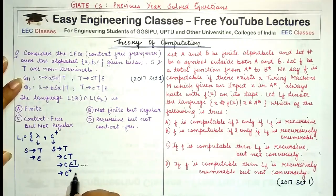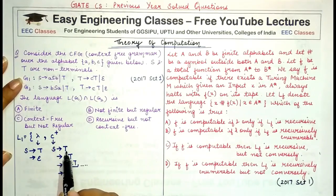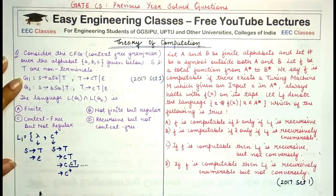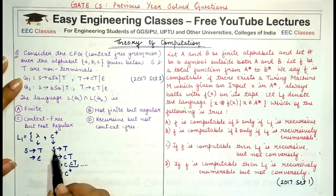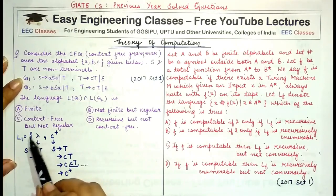Why C+ and not C*? Because using the productions S→T and T→CT — T being repeatedly replaced by CT — we would have at least one C. After S→T, if I replace T by lambda I get an empty string, which I have already written as lambda.